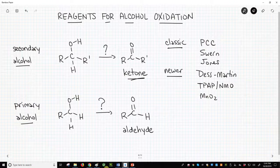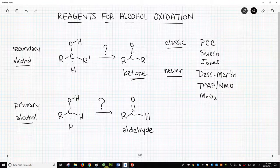They all place a leaving group on the alcohol oxygen in place of the hydrogen, provide a base, and remove a beta-hydrogen to form the new C-O pi bond.